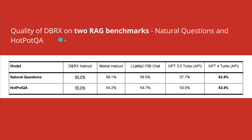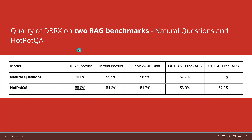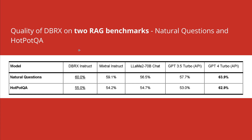There are two RAG benchmarks for retrieval augmented generation: Natural Questions and HotpotQA. GPT-4 Turbo still takes the lead with 63.9%, compared to Databricks Rx instruct at 62.9%, versus 55% by other models.